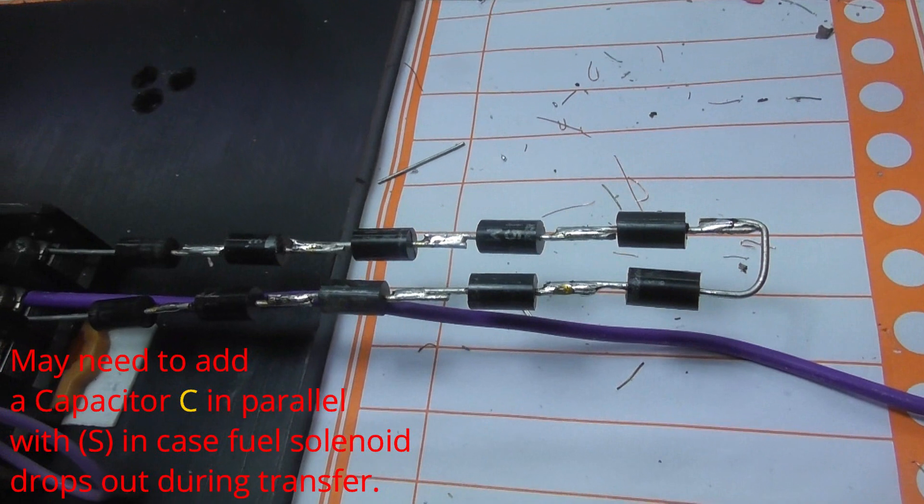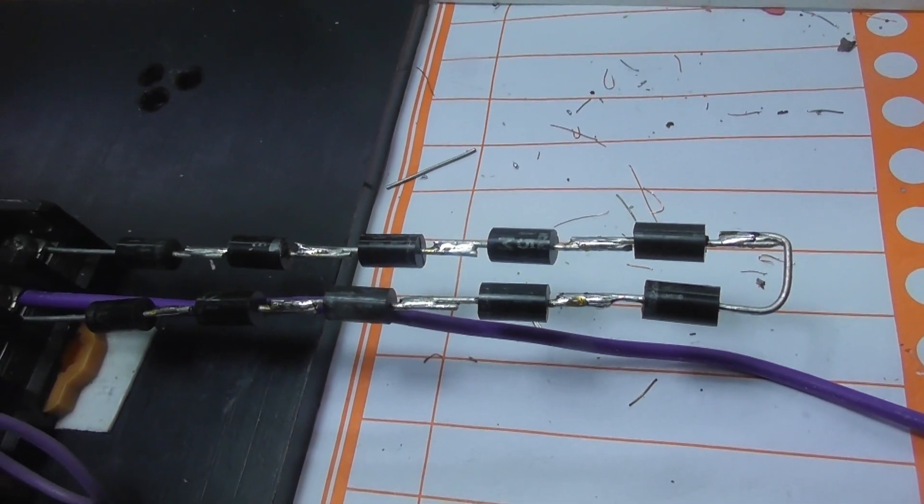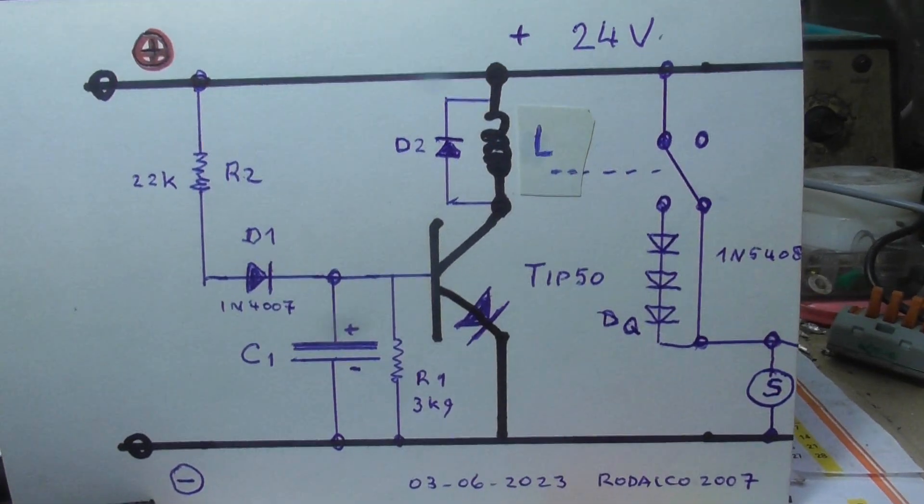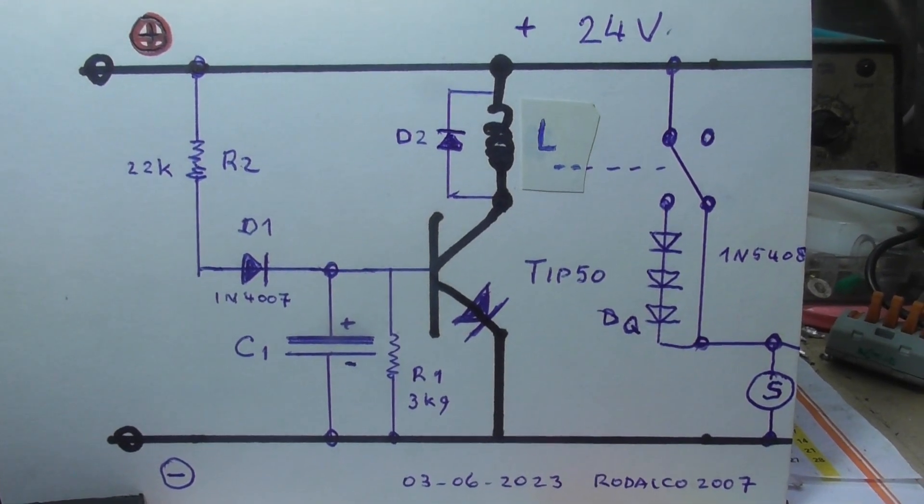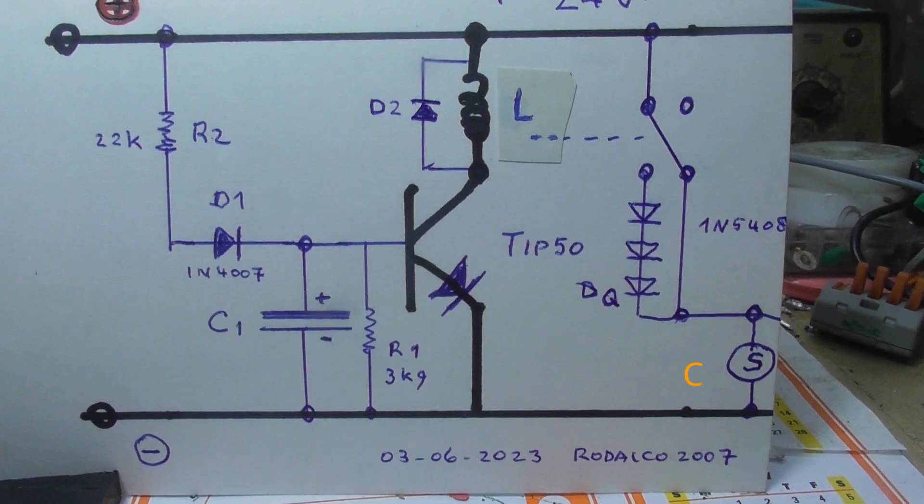It's a cluster of 10 diodes, 1N5408, to drop the voltage from about 24 volts, well 26 volts because it's unloaded here, to about 19 volts.